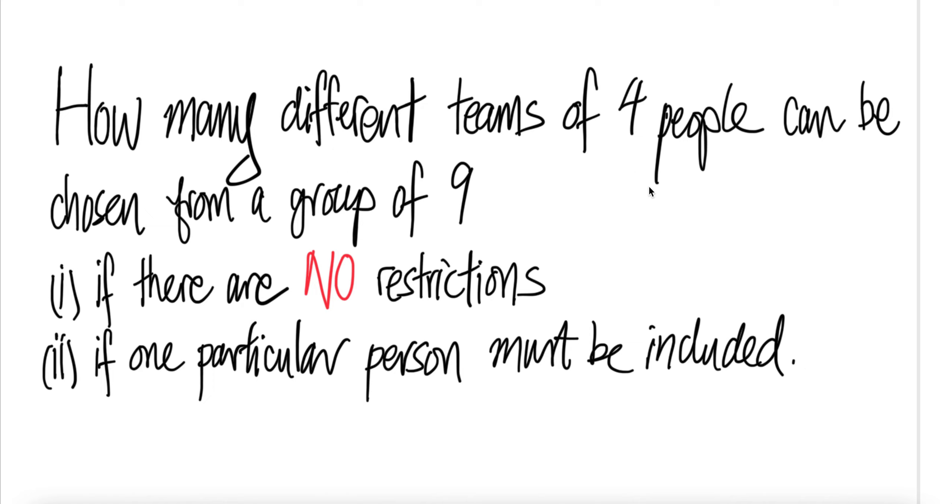How many different teams of four people can be chosen from a group of nine? Number one, no restriction. Number two, if one particular person must be included.